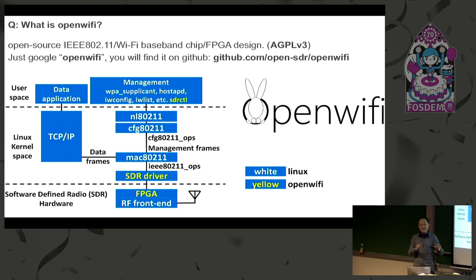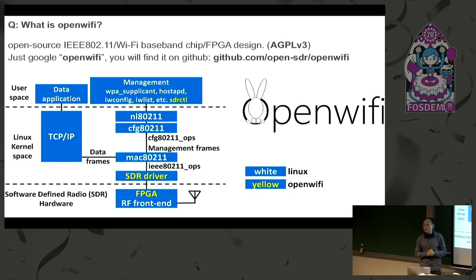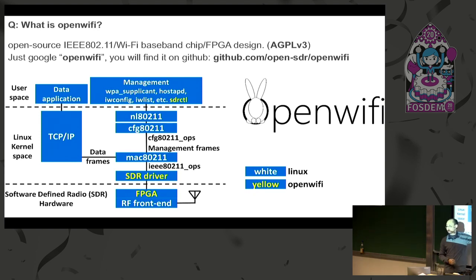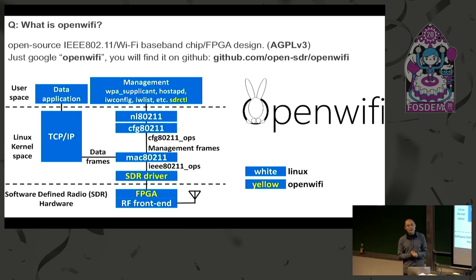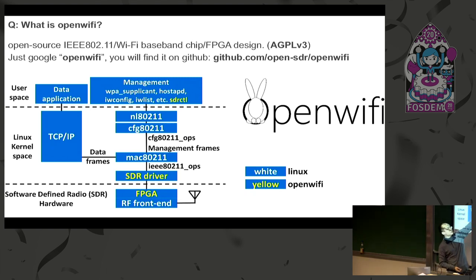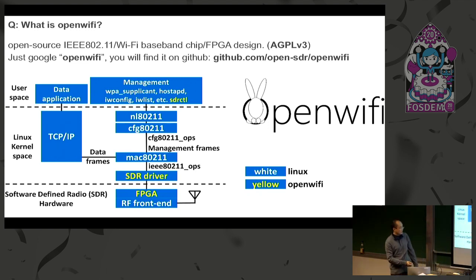Our design also works exactly the same way. We offer you the chip design, which is currently FPGA. We also offer you the open-source Wi-Fi driver, which works below the Linux native Mac 802.11 Wi-Fi framework. This framework is used for almost all commercial soft-MAC architecture Wi-Fi chips. We also offer a small user-space tool to communicate with our driver and FPGA. That's the basic architecture — same as a commercial chip.